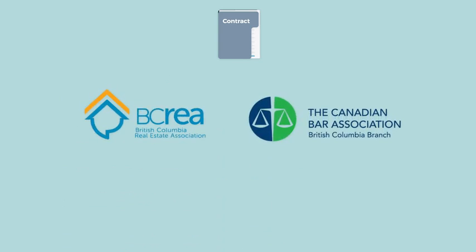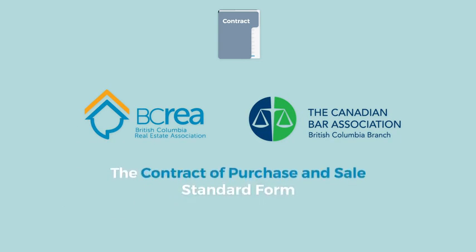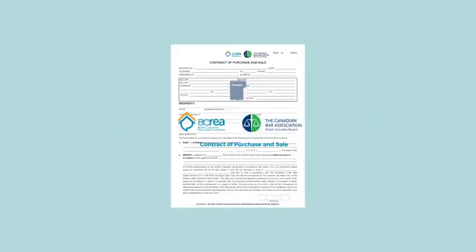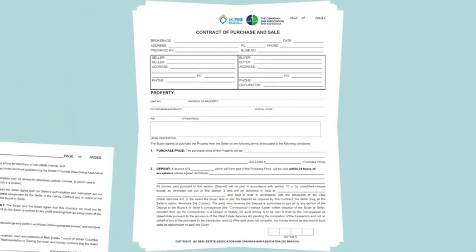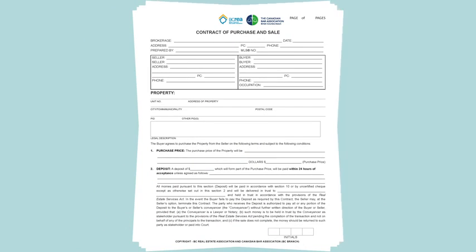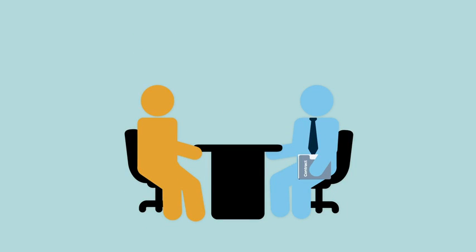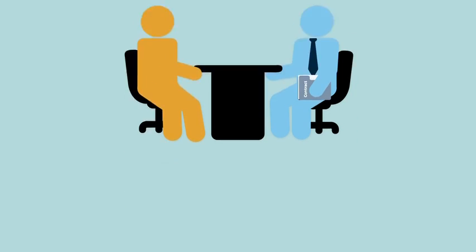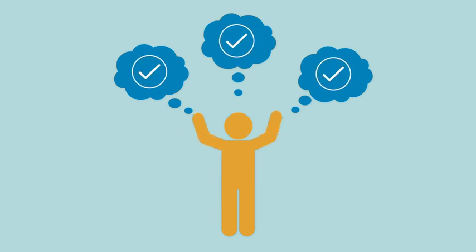Developed by the BC Real Estate Association and the Canadian Bar Association, the Contract of Purchase and Sale helps realtors and consumers work through the process of preparing a contract for the purchase and sale of a particular property. It standardizes the most common terms of a real estate transaction and provides a familiar format for buyers and sellers while still allowing for flexibility with respect to unique terms. This video provides essential information to help you understand the Contract of Purchase and Sale.